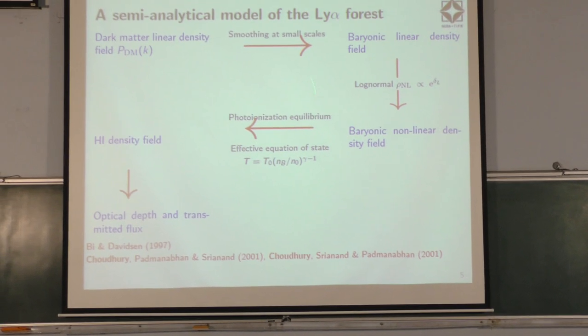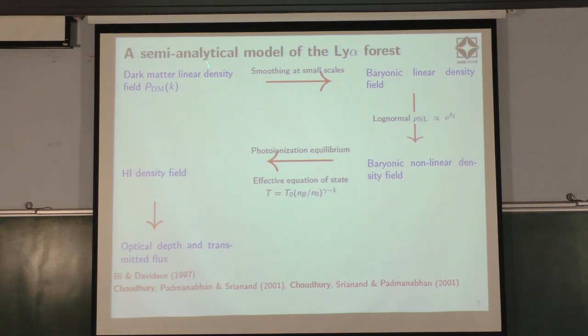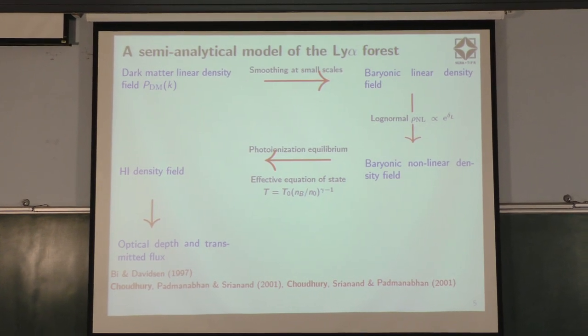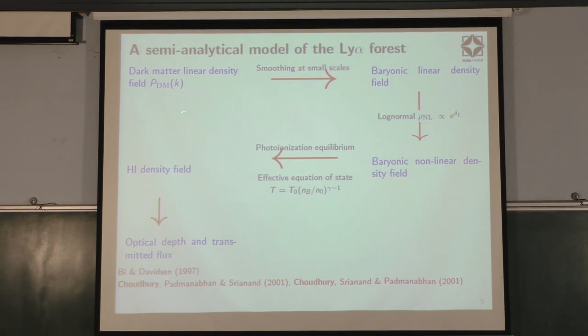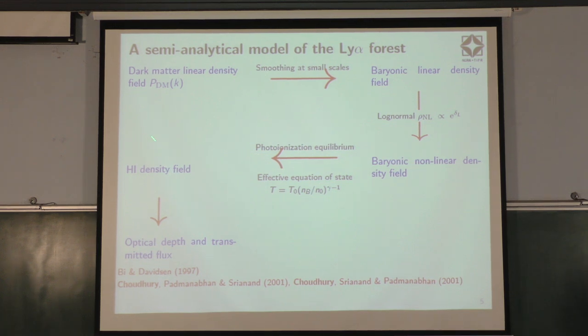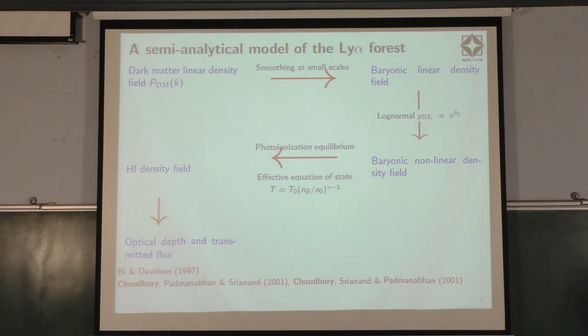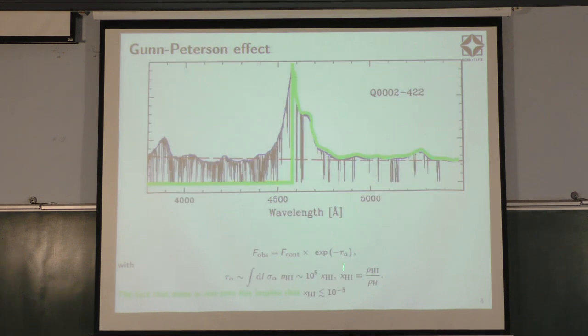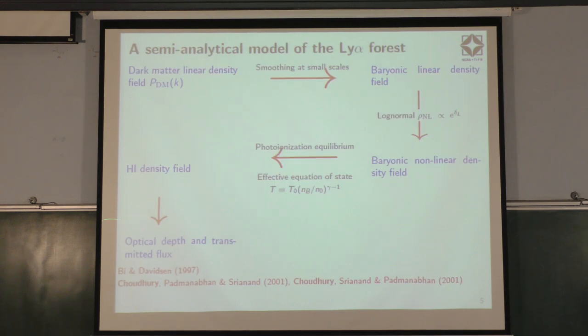This is where we wanted to actually make a semi-analytical model of the Lyman-Alpha forest. The essential idea is, you have been given a cosmology. You have been probably given the dark matter linear density field, the power spectrum, the linear power spectrum. Starting from this, you have to come to predicting this optical depth along with these fluctuations. So you have to come from here to here. And there are various steps you can take.